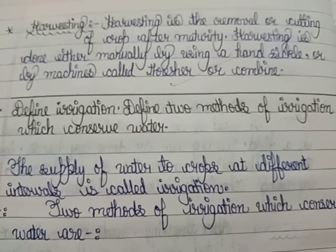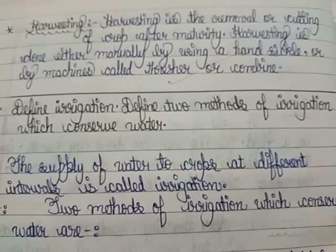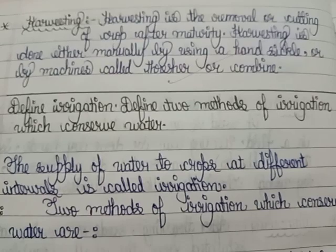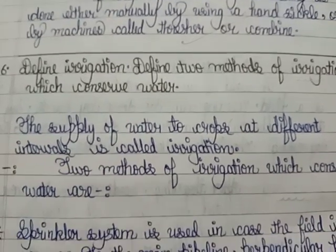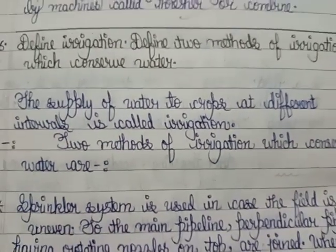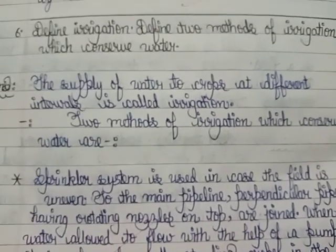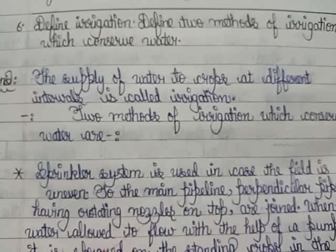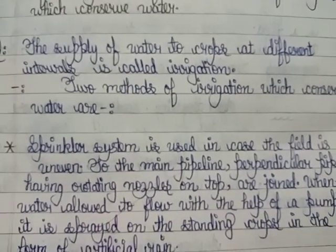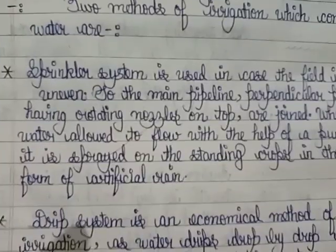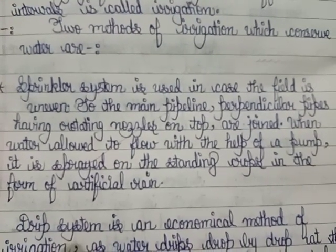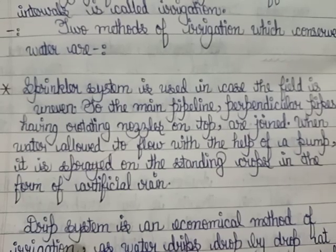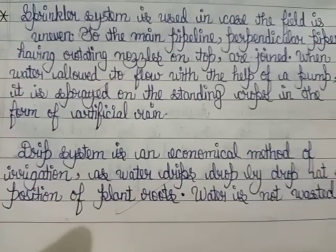Question number six: 'Define irrigation. Define two methods of irrigation which conserve water.' The definition of irrigation is the supply of water. The two methods are the sprinkler system and drip irrigation.